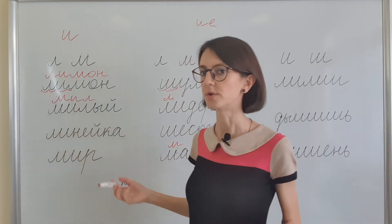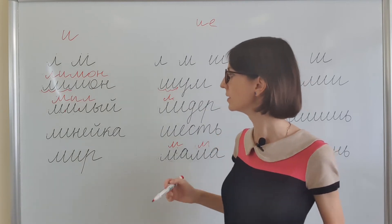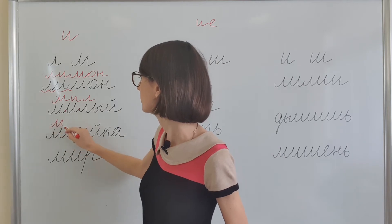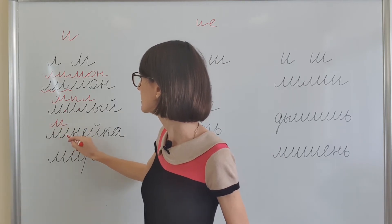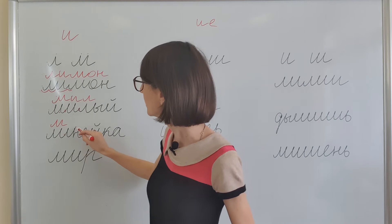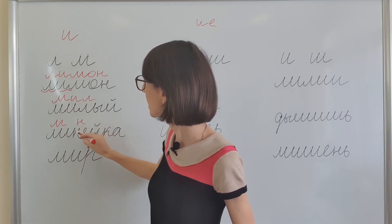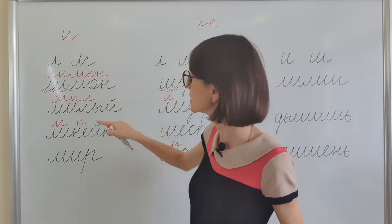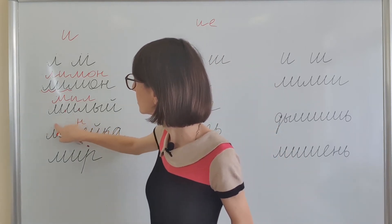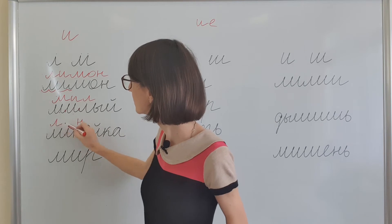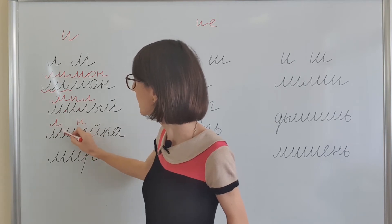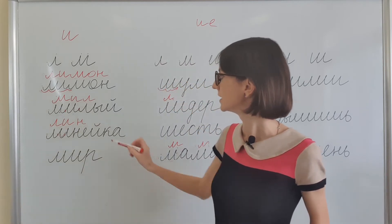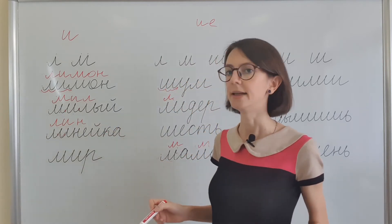It stops over here, and this is obviously И. Ейка — ЛИНЕЙКА. And last one — again, can you try to read this using the logic I explained?